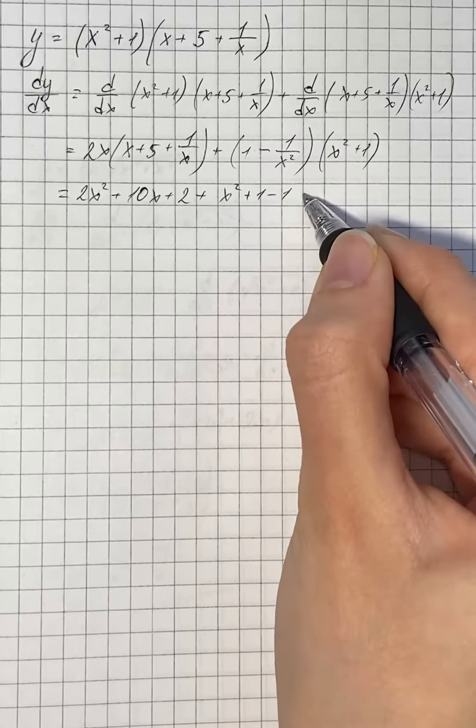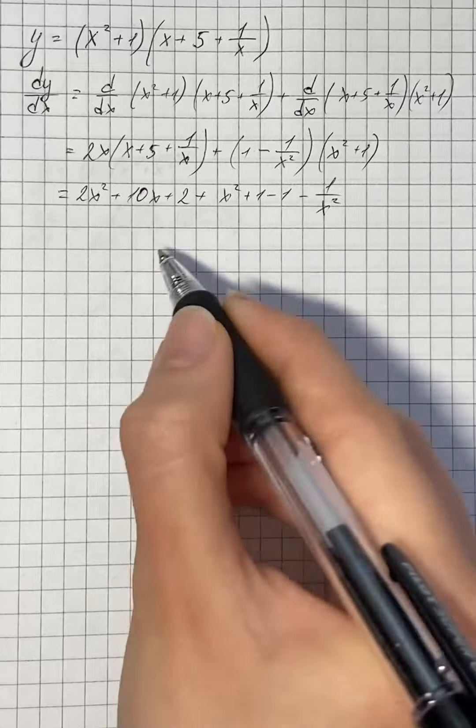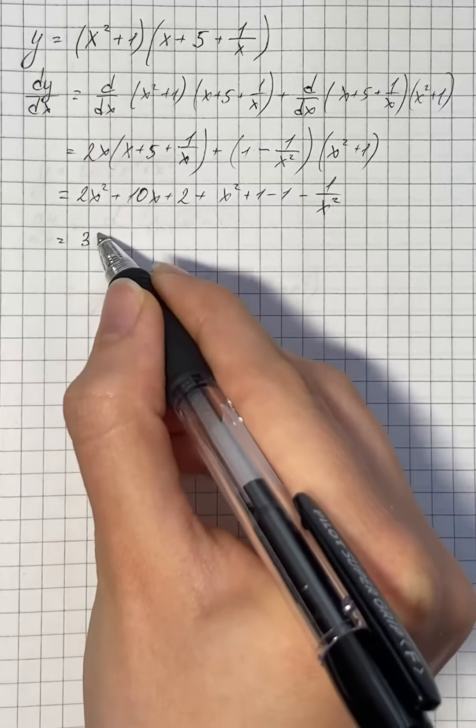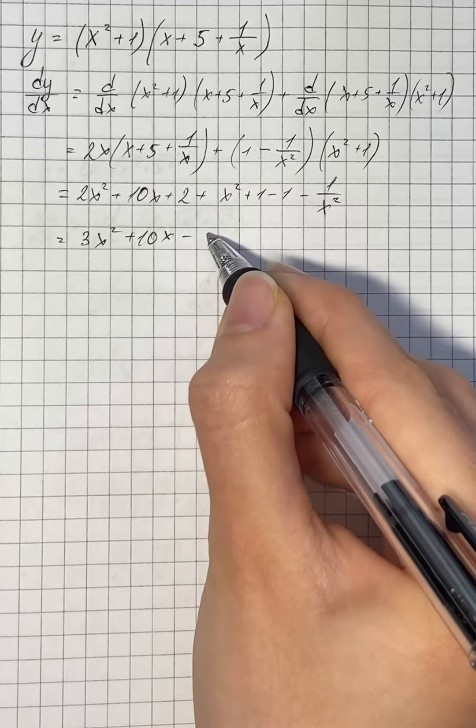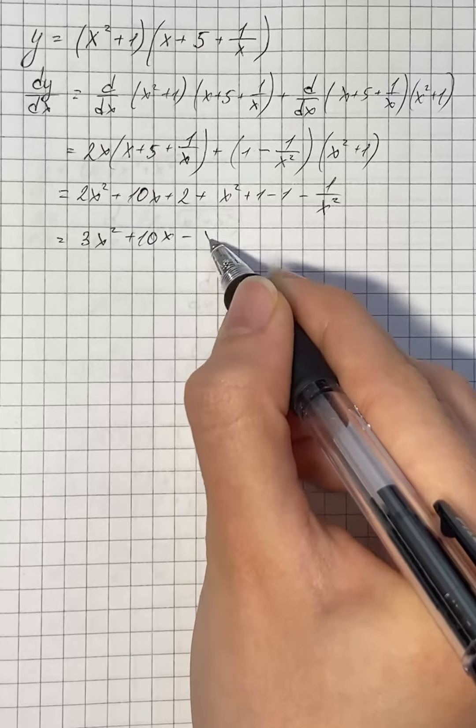Therefore we get 3x squared plus 10x minus x to the power of negative 2 and plus 2.